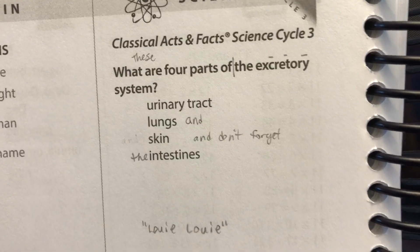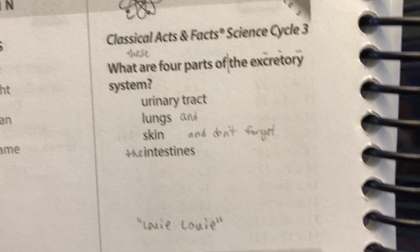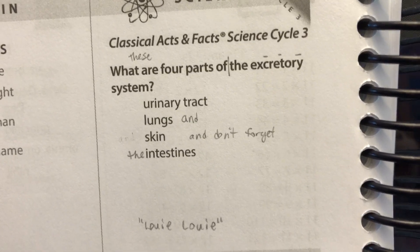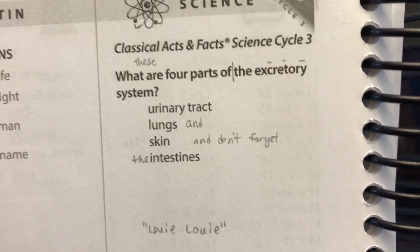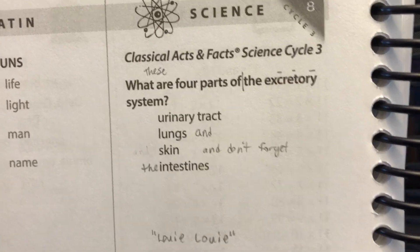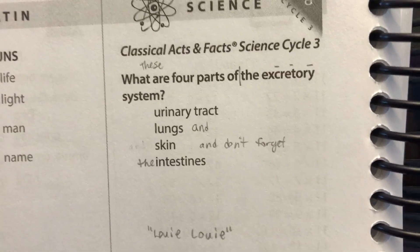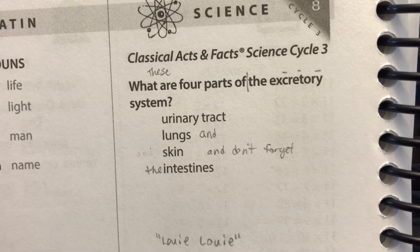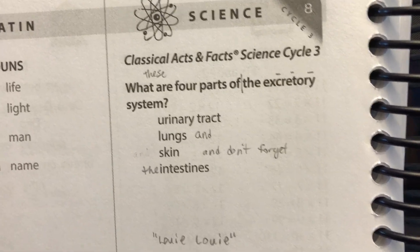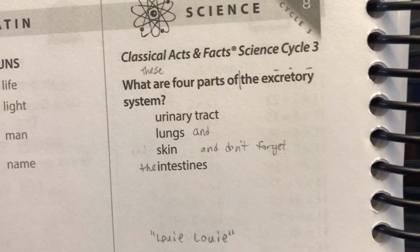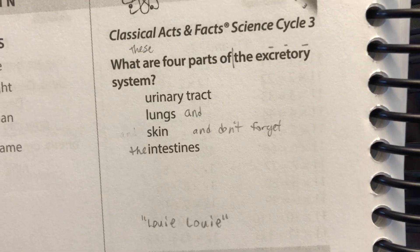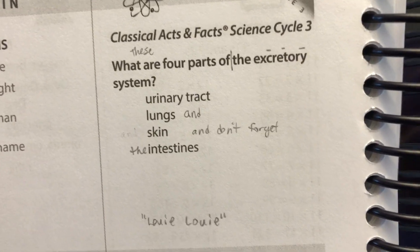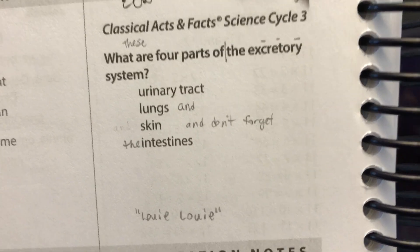What are four parts of the excretory system? These are four parts of the excretory system. Urinary tract, lungs and skin, and don't forget the intestines.